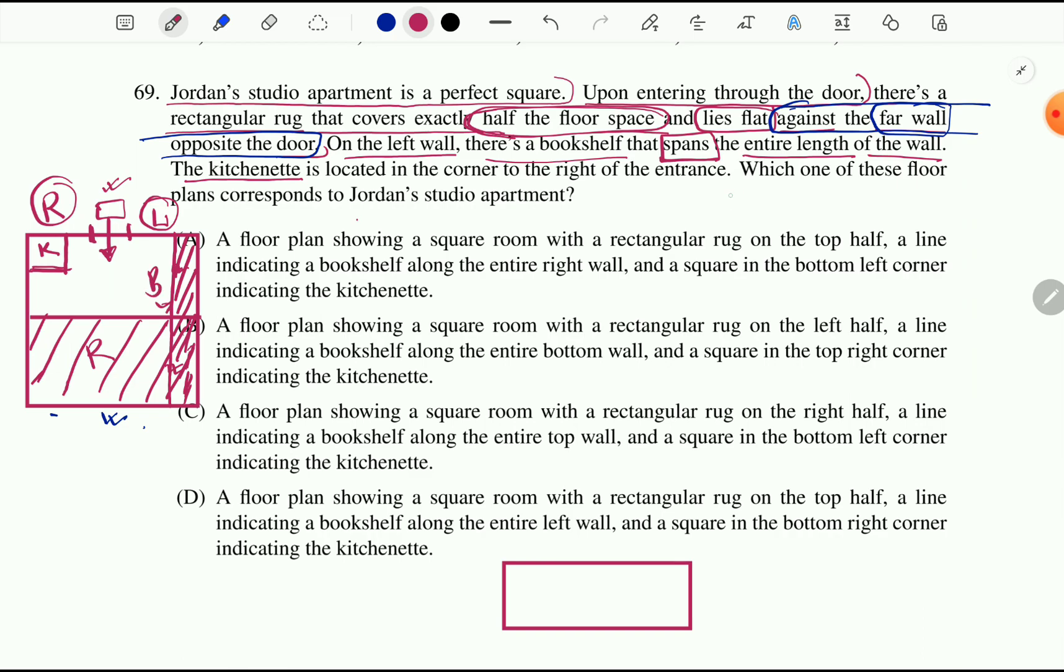What we have to find out? Which one of these floor plans corresponds to Jordan's studio apartment. So we have to study all of these options and we have to find out correct description which represents these floor plans.